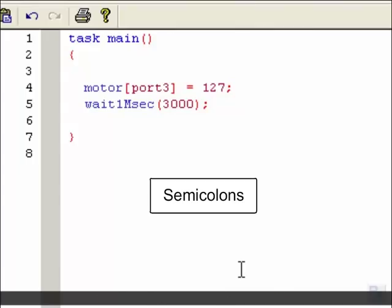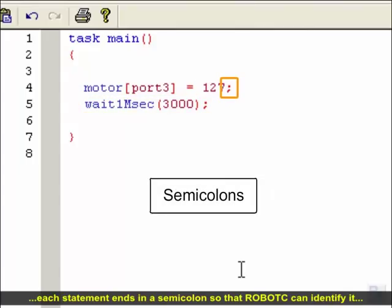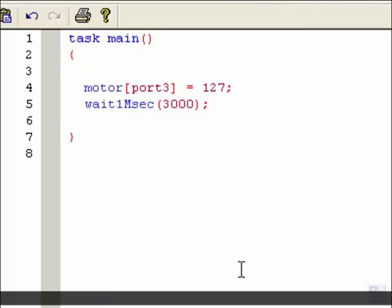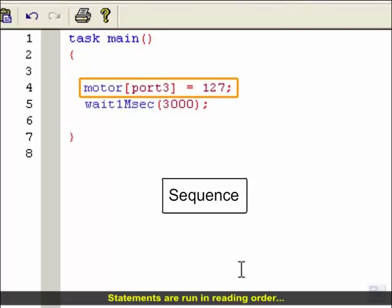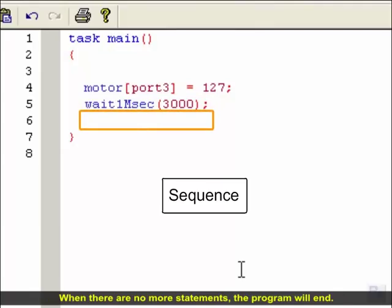So, to review, statements are commands to the robot. Each statement ends in a semicolon so that Robot C can identify it, but each is also written on its own line to make it easier for humans to read. Statements are run in reading order, left to right, top to bottom, and each statement is run as soon as the previous one is complete. When there are no more statements, the program will end.